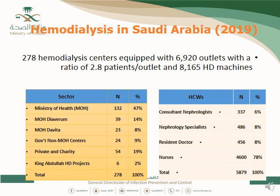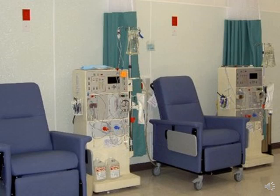Saudi Arabia has 278 hemodialysis centers as of 2019. The Ministry of Health runs approximately 50% of these centers. Nurses, nephrologists, and other healthcare providers who deal with hemodialysis patients will need training on hemodialysis surveillance. Centers typically receive several patients daily, working five days a week, and hemodialysis patients usually receive three sessions per week.